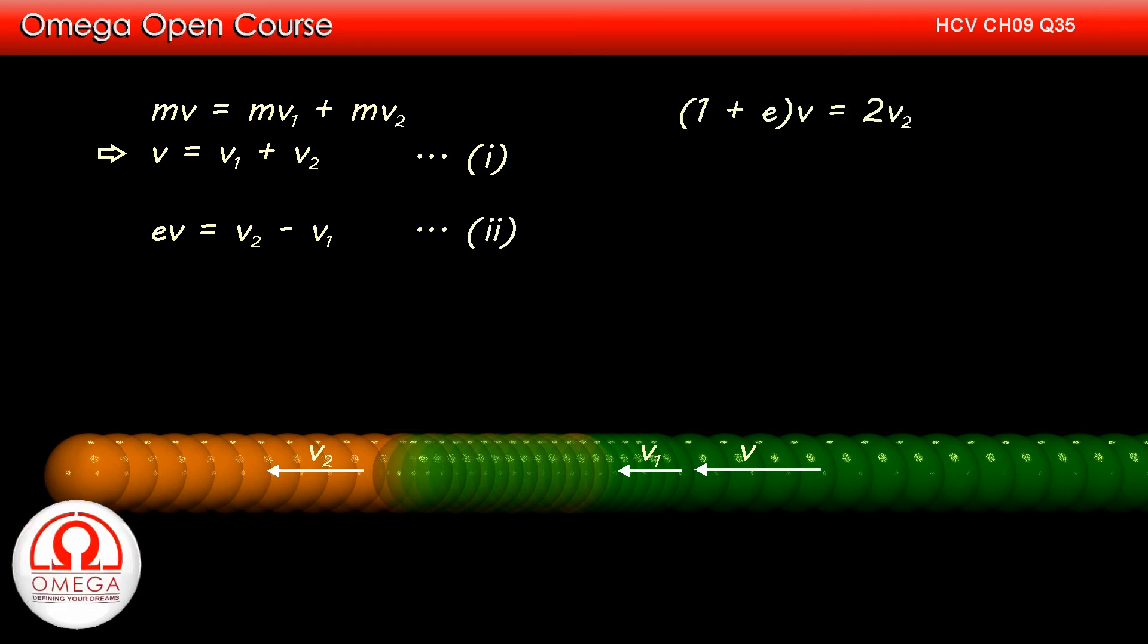Adding equations 1 and 2, we get 1 plus E into V is equal to 2V2. This implies V2 is equal to 1 plus E into V by 2. Subtracting equation 2 from equation 1, we get 1 minus E into V is equal to 2V1 or V1 is equal to 1 minus E into V by 2.